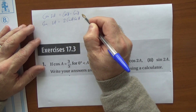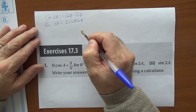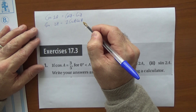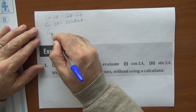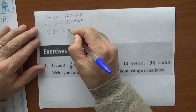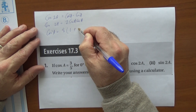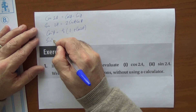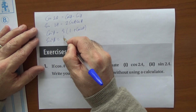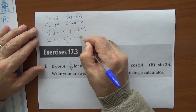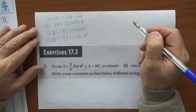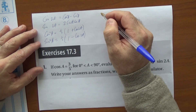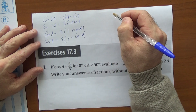In a rearranged format, we have cos²(a) = ½(1 + cos(2a)), and sin²(a) = ½(1 - cos(2a)). Furthermore, we have the double angle formulas in terms of tan.